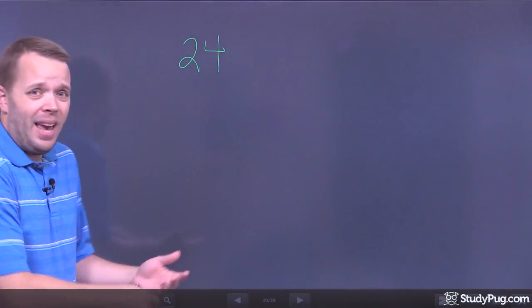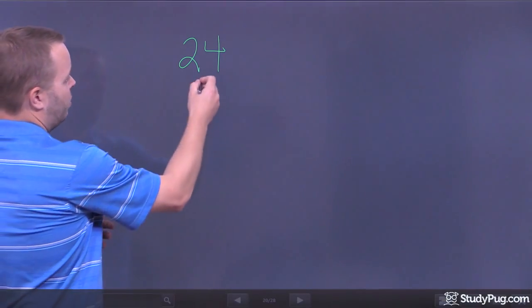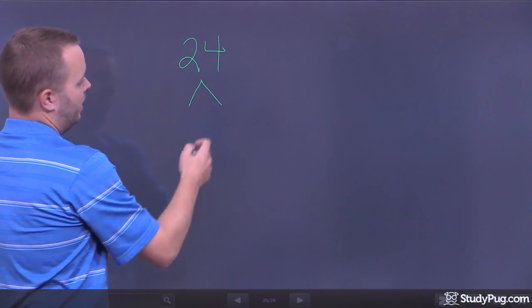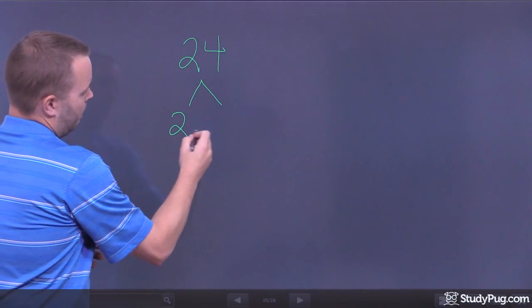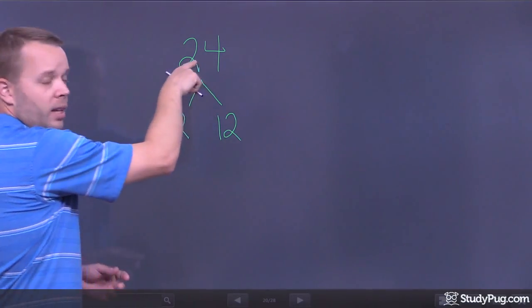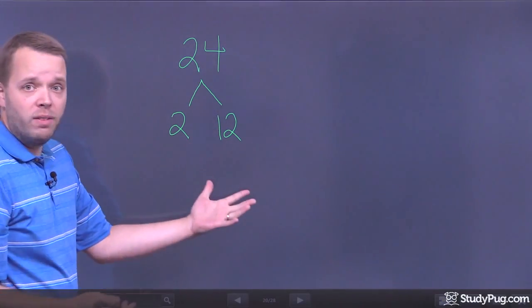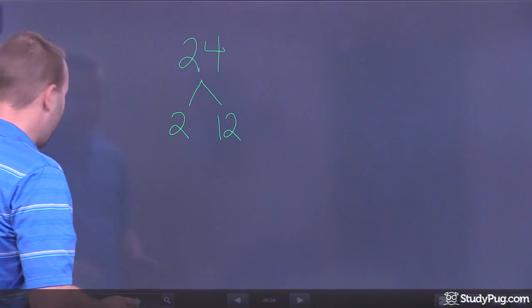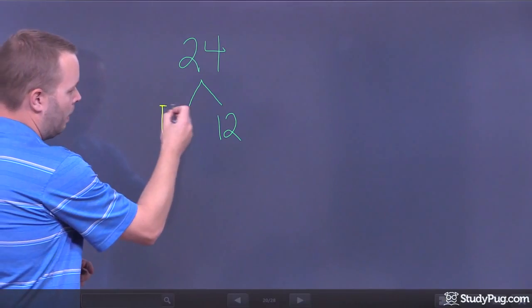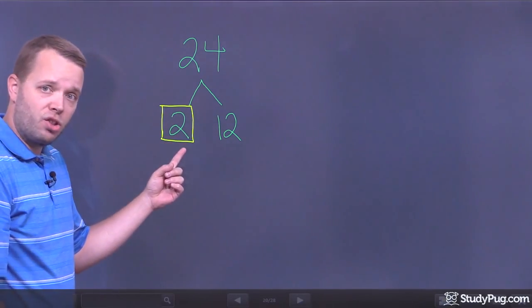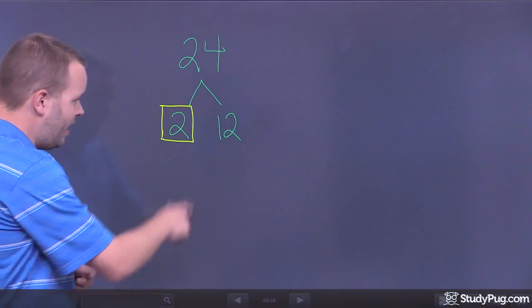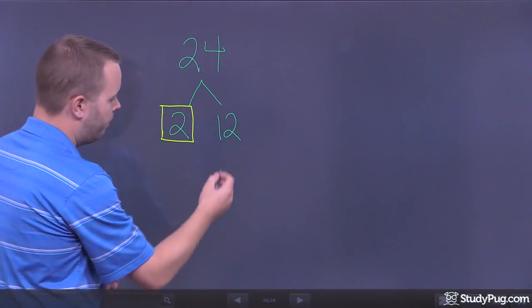I can pick any two numbers. I'm going to start with 2 because 2 is easy. And what I'm going to do is I'm going to draw two branches, and I'm going to write the multiplication statement that totals up to 24. 2 times 12 is 24. As soon as you hit a branch that has a prime number, it ends. I can't break that down any further. I'm going to stop right there.